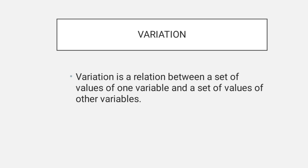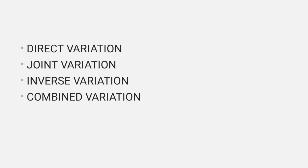Variation has a constant K. We have four types of variations, which are direct variation, joint variation, inverse variation, and combined variation.